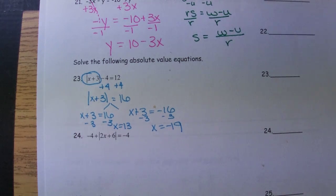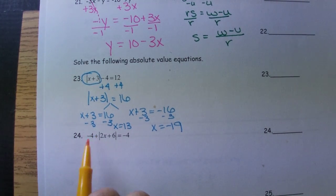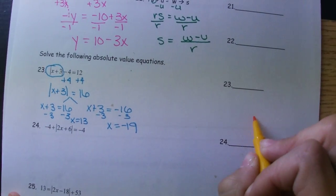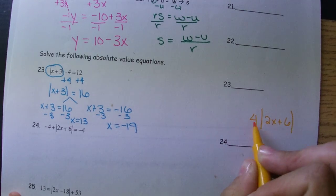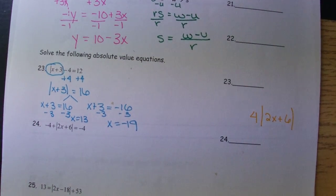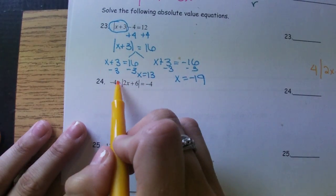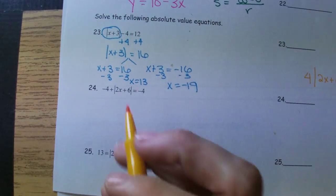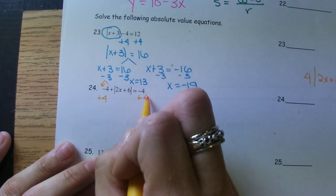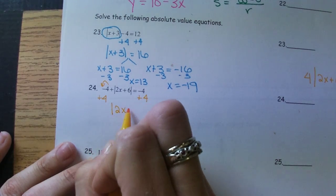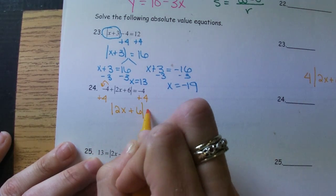Number 24. This negative 4 isn't sitting right against the absolute value bars. So if we had something that looked like this, this is attached with multiplication, and we would undo it with division. But this right here is attached with addition and subtraction. So we need to use our rule where we look in front. So we'll have the absolute value of 2X plus 6 equals 0.